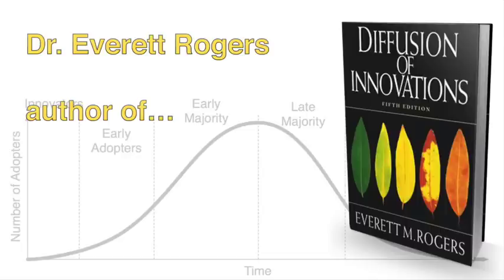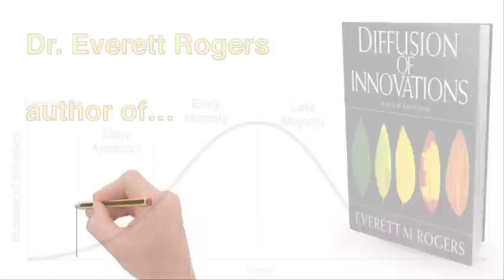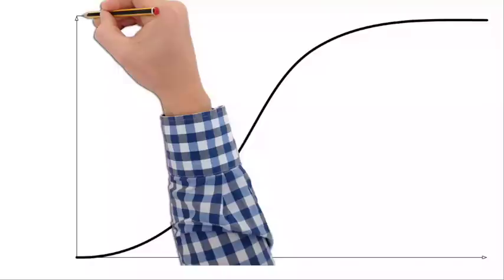Rogers' book was called The Diffusion of Innovations. In The Diffusion of Innovations we see that the level of adoption rises through time, growing slowly at first, then rising fast, and finally the last levels of adoption take a long time to achieve.